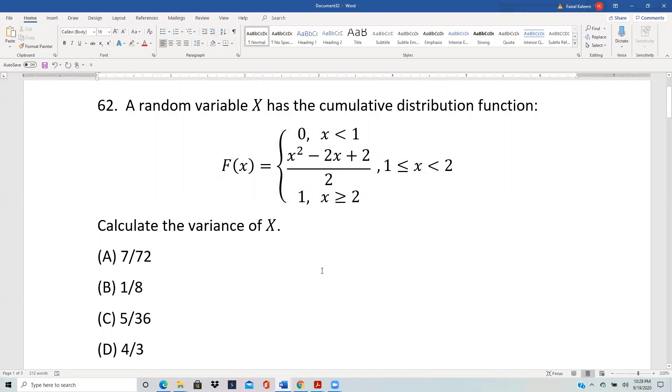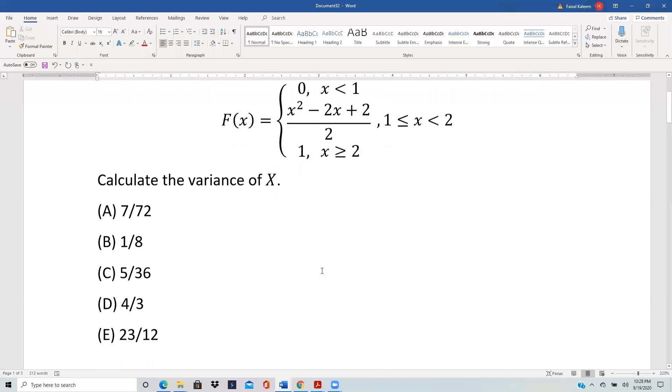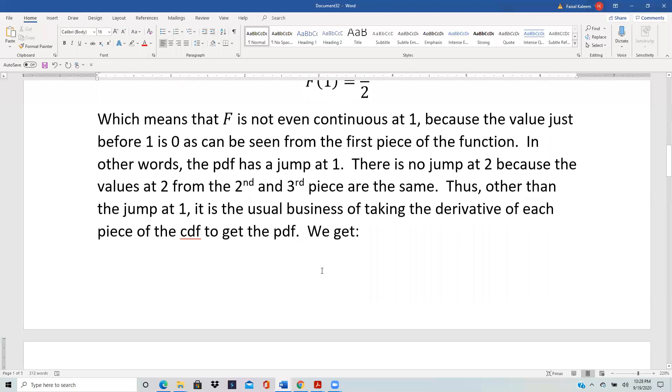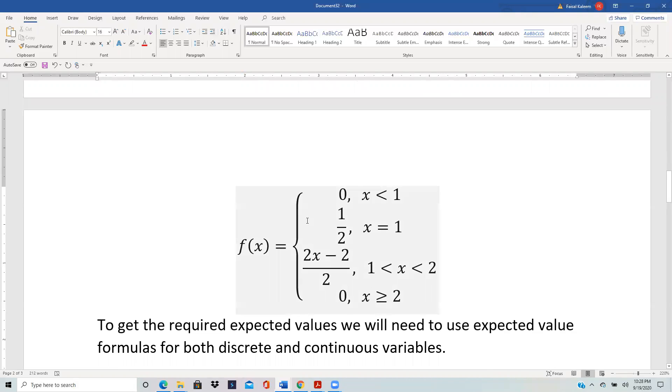So when we write the PDF we take this into account. We recognize that the probability was zero when x is less than 1, and then at x = 1 it suddenly jumps to a half.